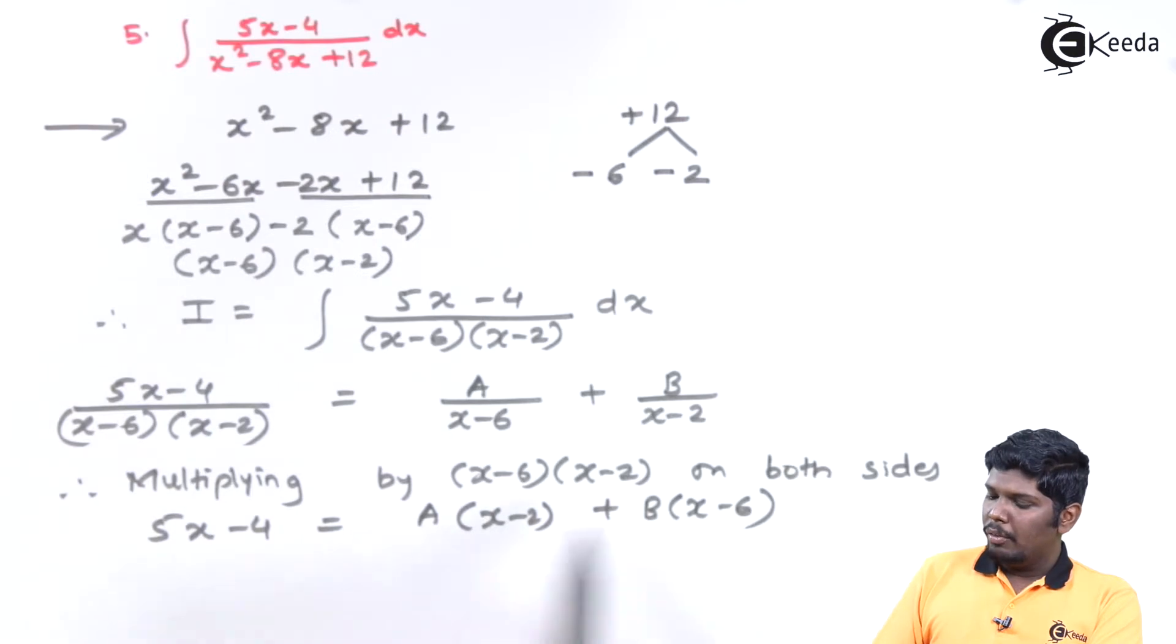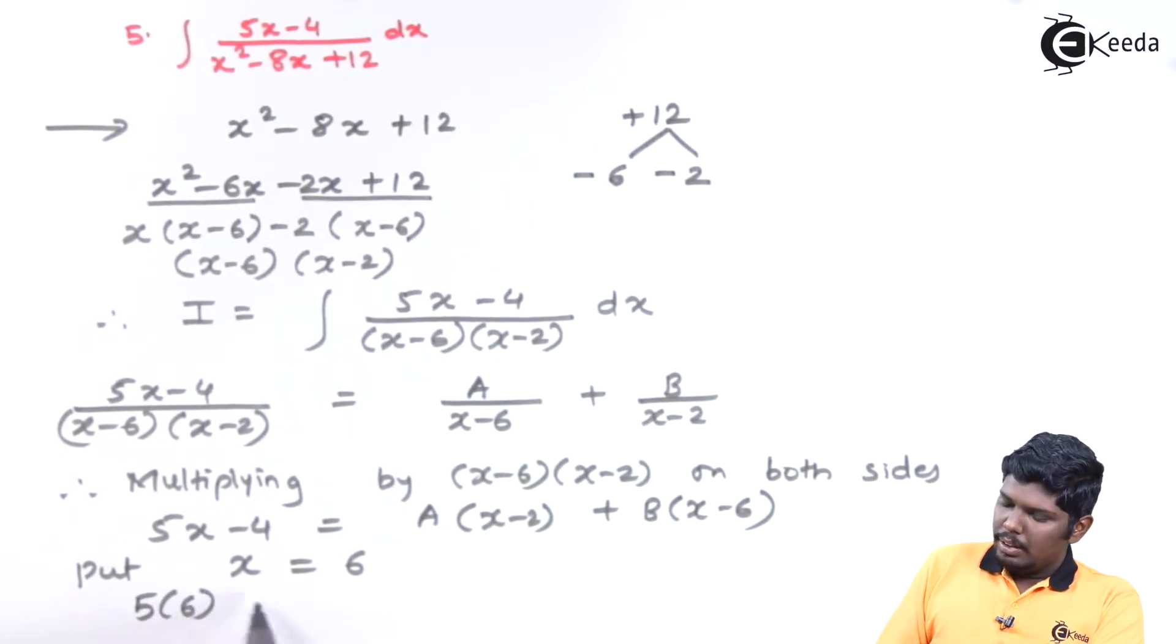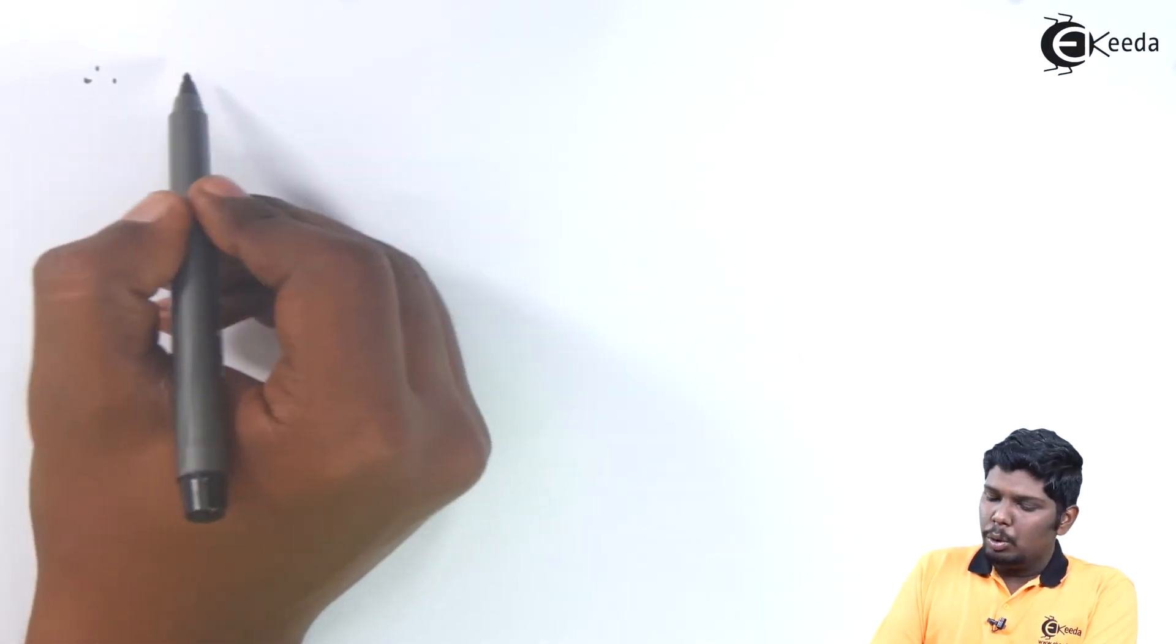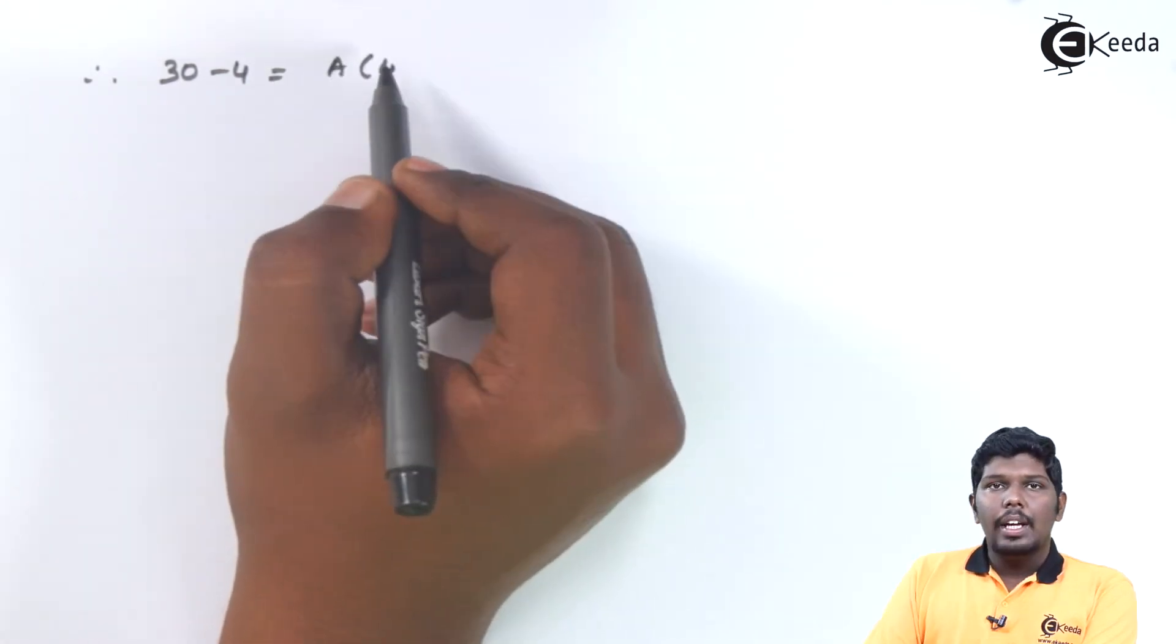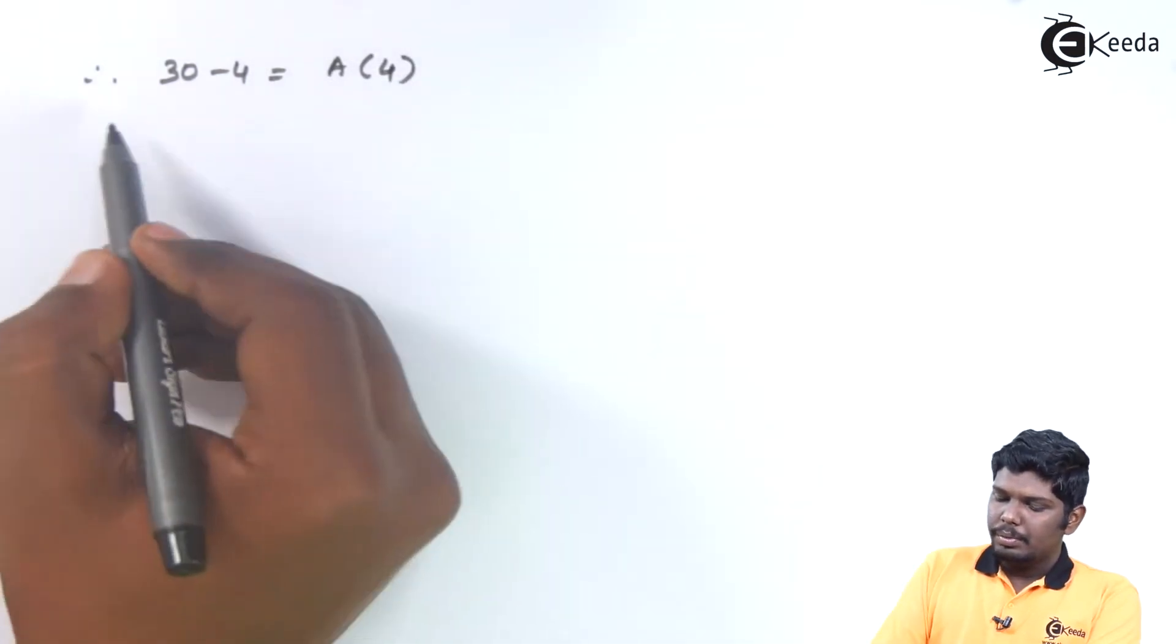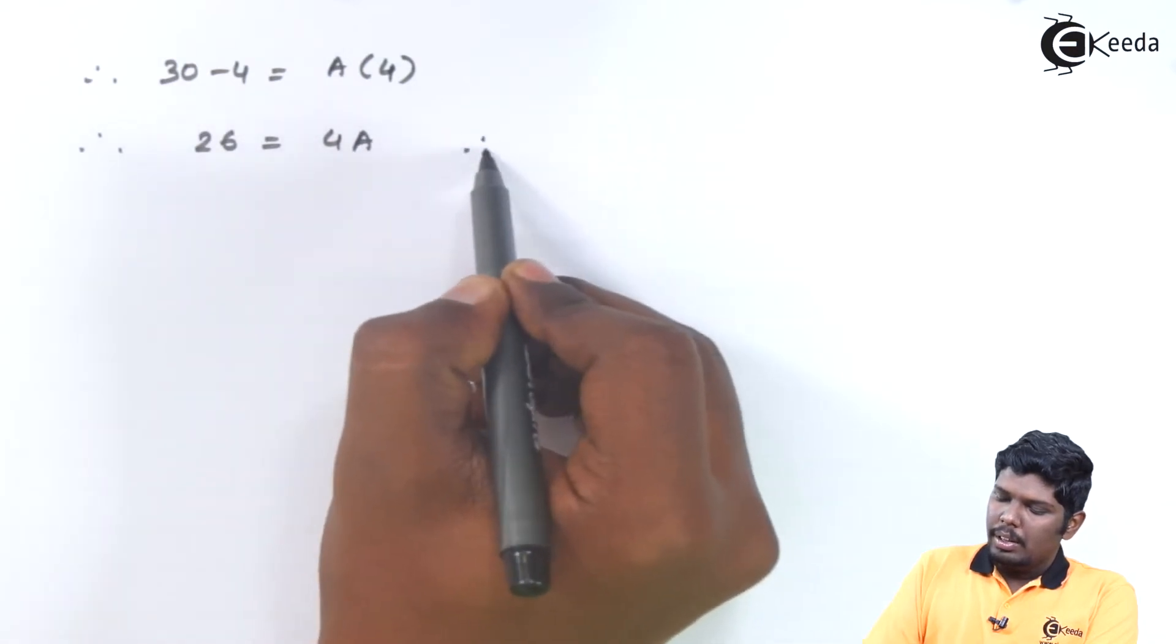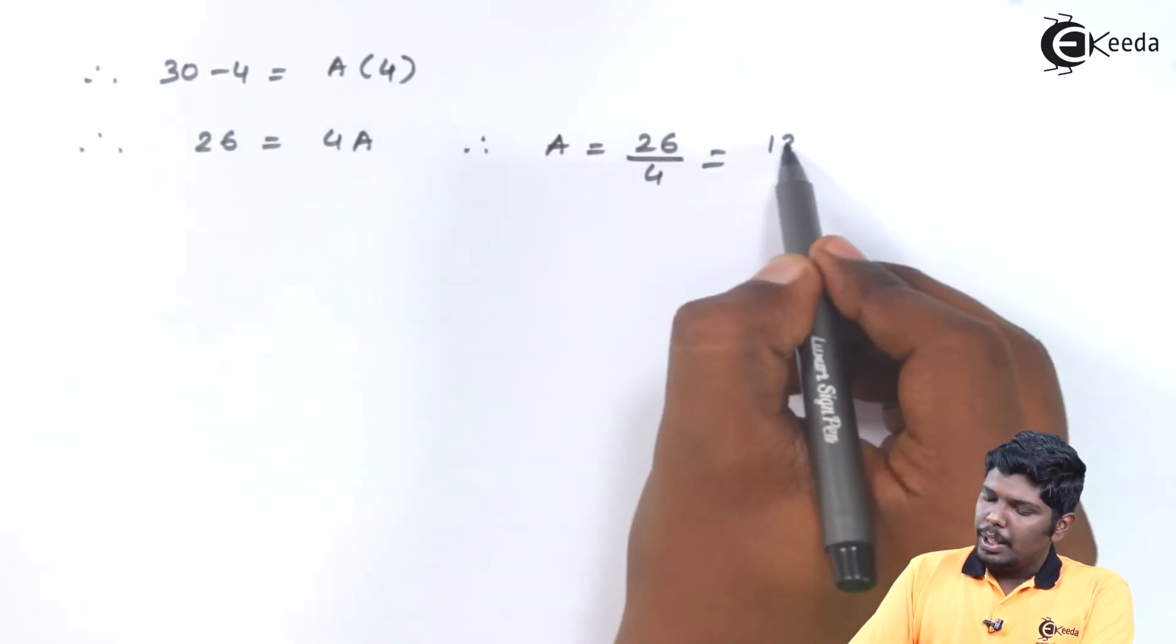To find the value of a first we will substitute the value of x as 6, so that 6 minus 6 will become 0. Put x is equal to 6. This will give you 5 into 6 minus 4. Here we have a into 6 minus 2 and 6 minus 6 will be 0. Therefore 5 into 6 is 30 minus 4 is equal to a into 6 minus 2 will give you 4. 30 minus 4 is equal to 26 is equal to 4a. Therefore the value of a will be 26 upon 4 which is equal to 13 upon 2.